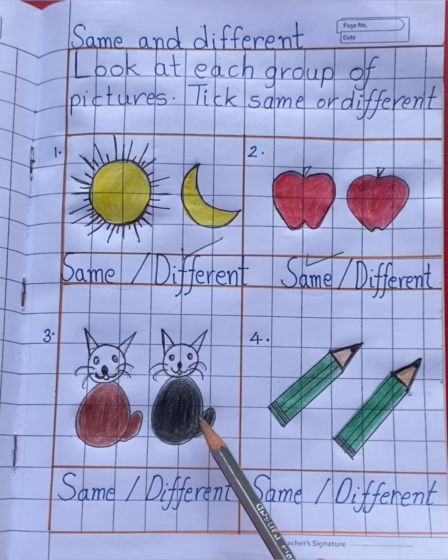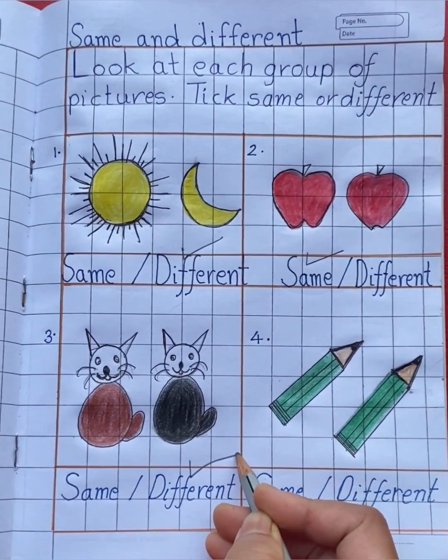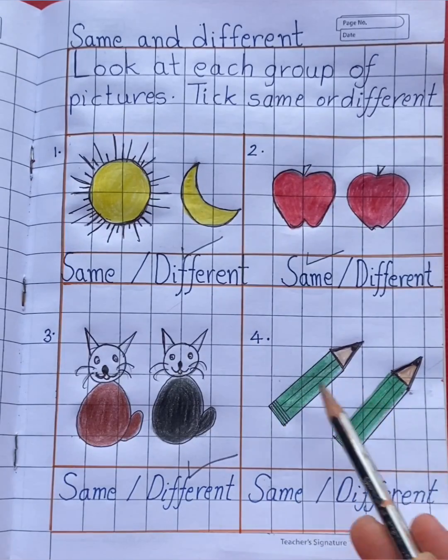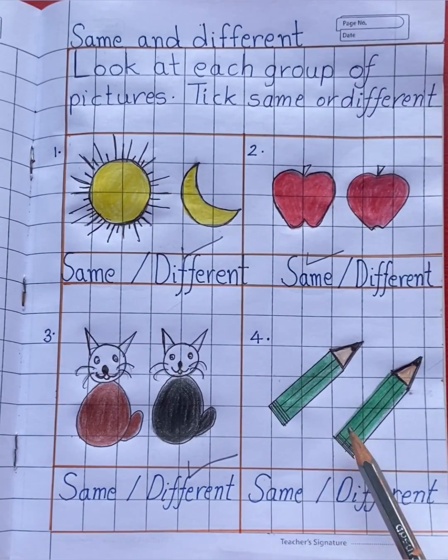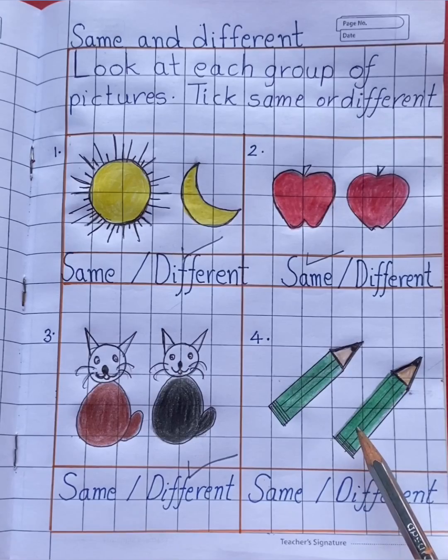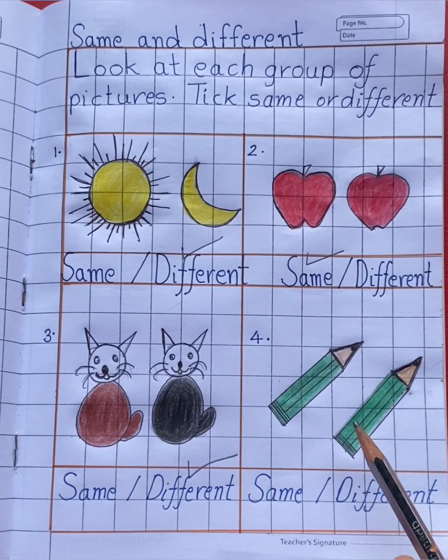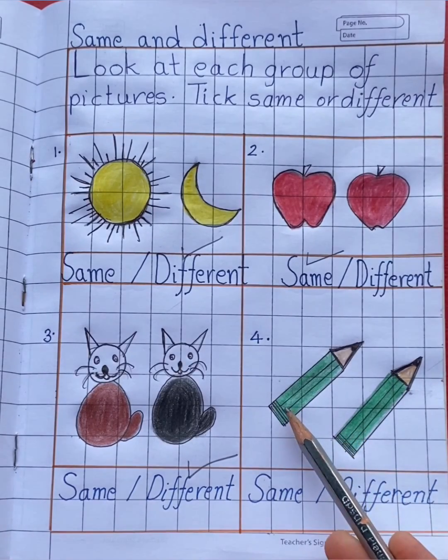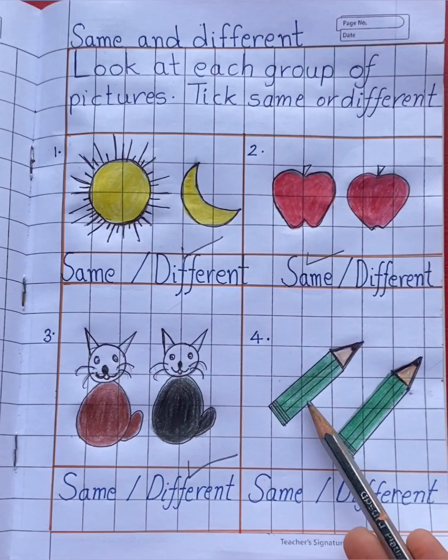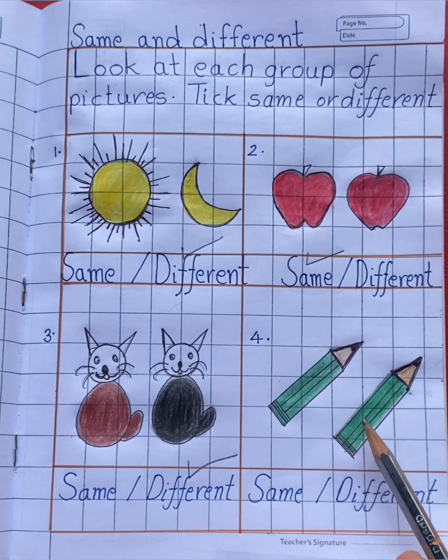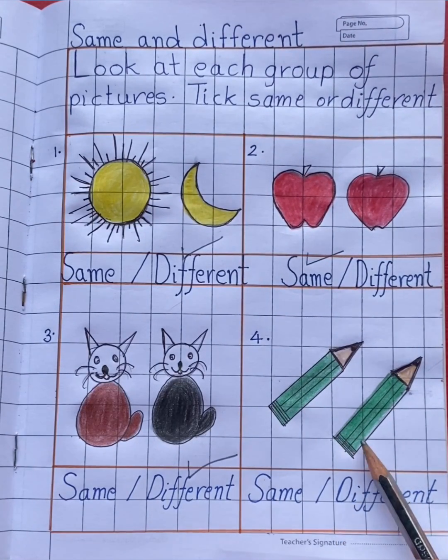See the last group. In this group you can see two pencils. Are they same or different? Yes, yes, they are same. First pencil is green in color, second pencil is also green in color. So they are same, so tick same.